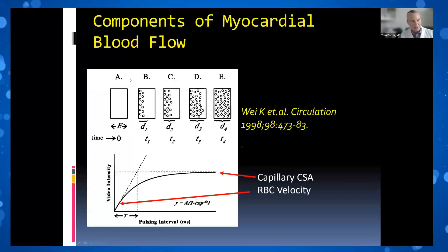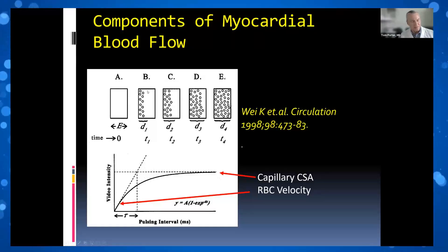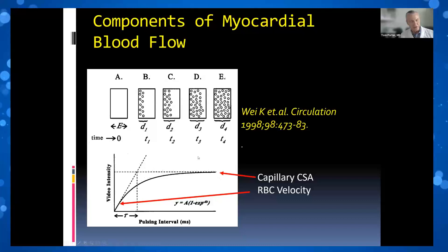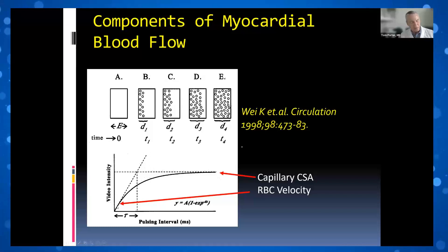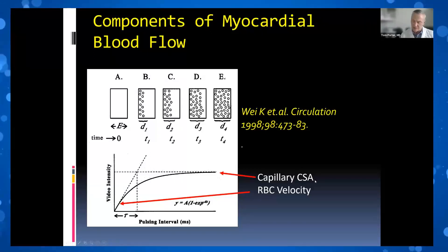This is the original work of Kevin Wei from 1998, when this phenomenon was discovered. You clear the microcirculation with a high mechanical index impulse, then return to the very low mechanical index non-linear fundamental imaging technique and analyze replenishment as a function of time. Typically within 4 seconds, you should reach plateau intensity. Red blood cell velocity is detected by the initial slope of the replenishment curve; capillary cross-sectional area is the plateau intensity. Velocity times cross-sectional area gives myocardial blood flow.